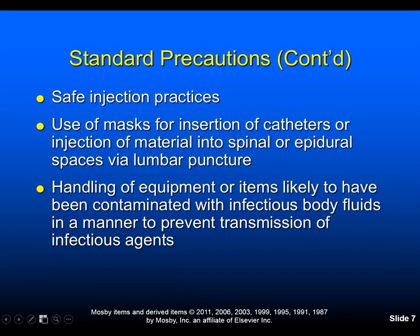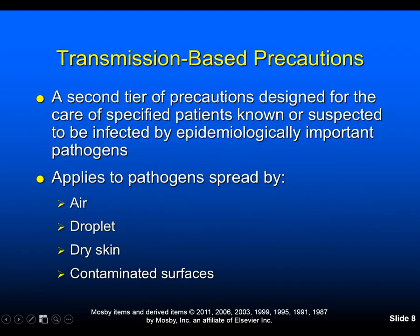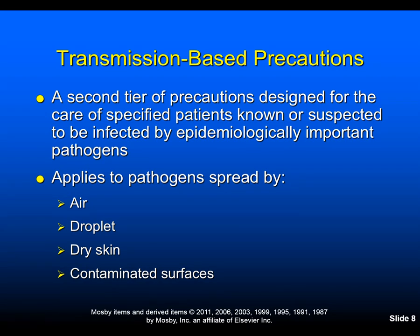If tolerated, the patient could wear a surgical mask, and we can maintain spatial separation of greater than three feet if possible to limit exposure. Safe injection practices, as well as the use of masks for inserting catheters or injection of material into the spinal or epidural space, and handling of equipment likely contaminated, will all prevent the transmission of infectious agents. Transmission-based precautions are a second tier designed for care of patients known or suspected to be infected by epidemiologically important pathogens spread by air, droplet, or on dry skin or contaminated surfaces.